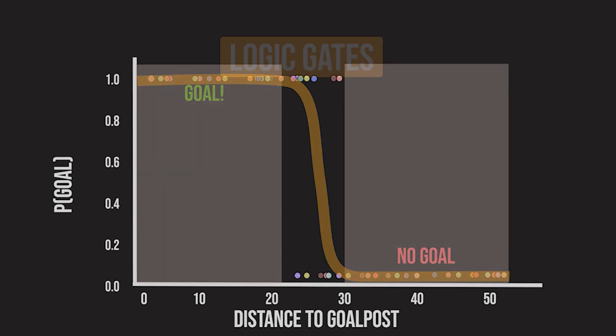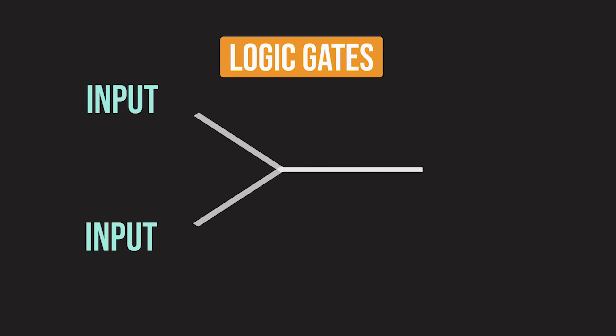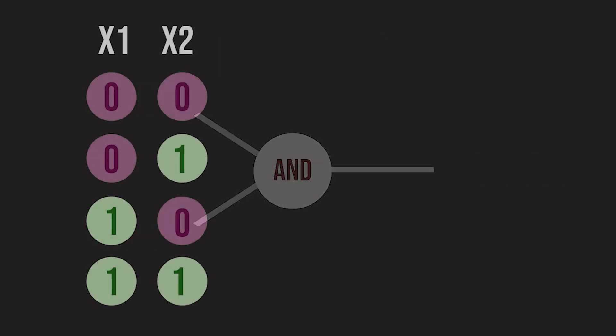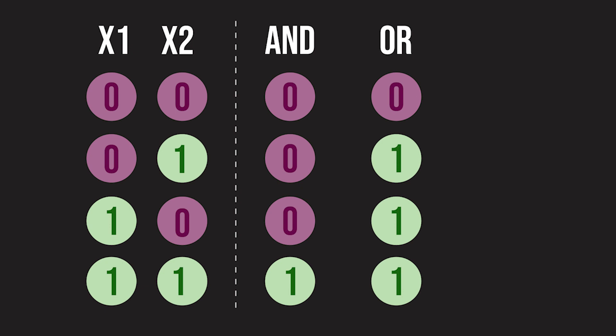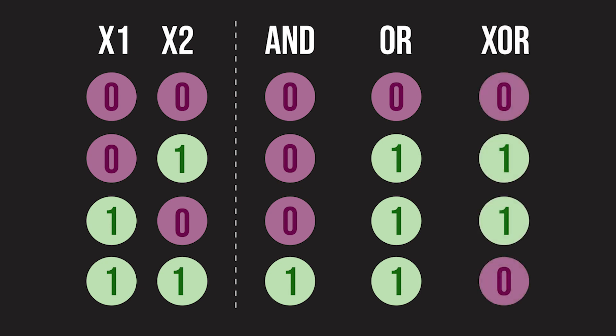Back to neural networks, let's take the simple example of modeling logic gates. Logic gates are defined by these tables, called truth tables. AND checks whether both inputs are 1. OR checks if at least 1 input is 1, and XOR checks if exactly 1 input is 1.